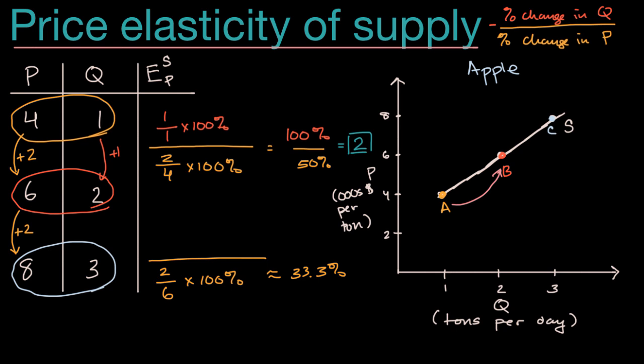And then what is our percent change in quantity supplied? Well we are going to go from two to three. So we start at a base of two. We increase by one. And multiply it times 100%. And so that's going to be equal to 50%. And so when we have a one third increase or 33.3% increase in our price, we have a 50% increase of our quantity supplied when we go from point B to point C right over here. And then one way to think about it is 50% divided by a third is the same thing as 50% times three. And so this is going to be equal to 1.5.